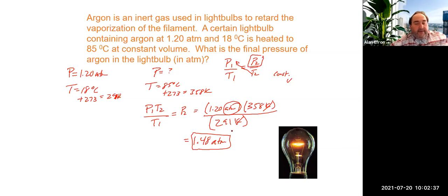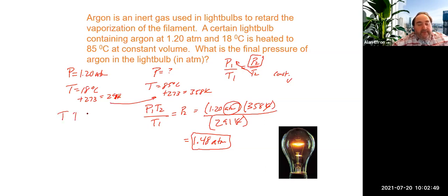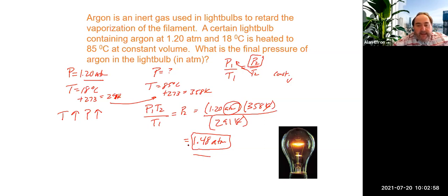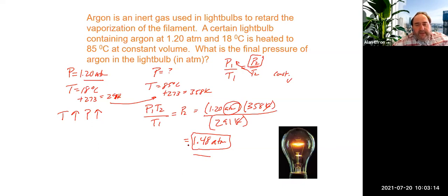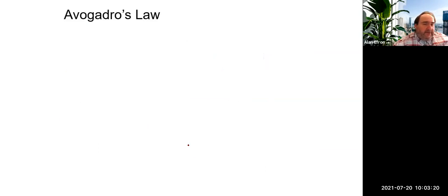Our pressure is 1.48 atmospheres. We can verify: temperature went up, so we expect pressure to increase — and it did, from 1.2 to 1.48. That makes sense. Those are some gas laws dealing with pressure, volume, and temperature relationships. Another important gas law involves Avogadro.